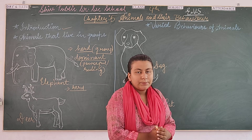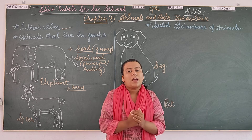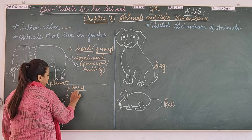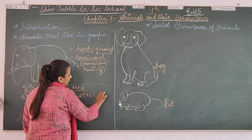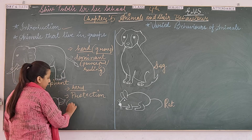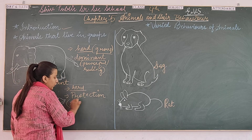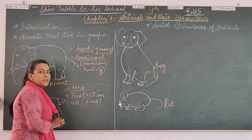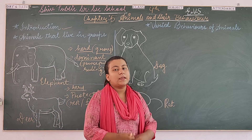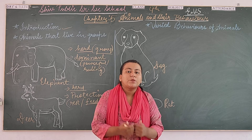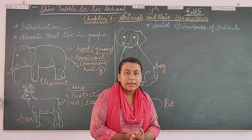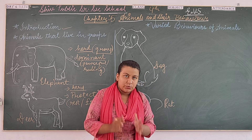In a deer herd, there is a main leader. The main leader's job is to be on guard all the time in protective places. When the other group members are resting or eating food, the leader takes the responsibility of their protection.